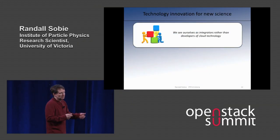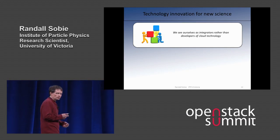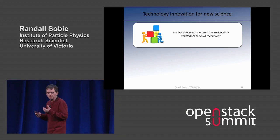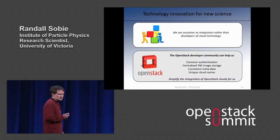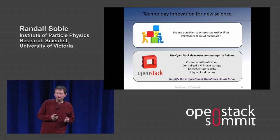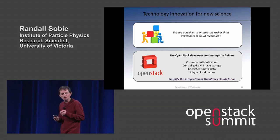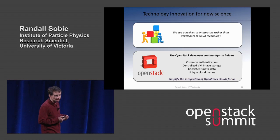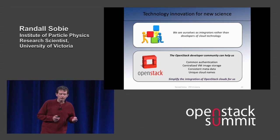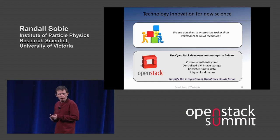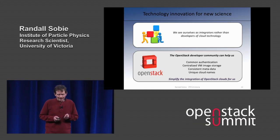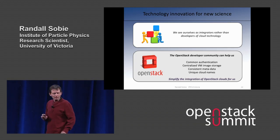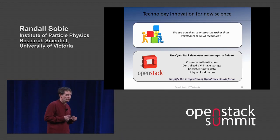I'm a particle physicist that's interested in computing. I see myself and my team as integrators rather than developers of cloud technology. What would help our life is common authentication, a centralized VM image store that we could download from rather than having to upload to every cloud, consistent metadata, and to not use Nova as your cloud name. These are things that would help simplify our lives.